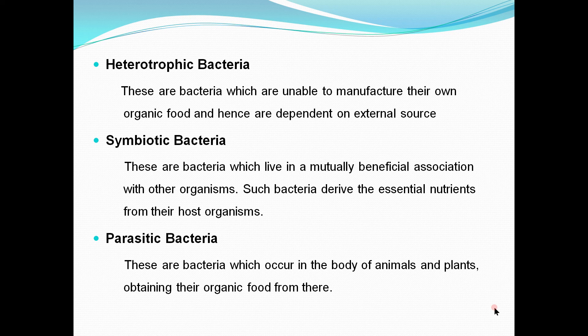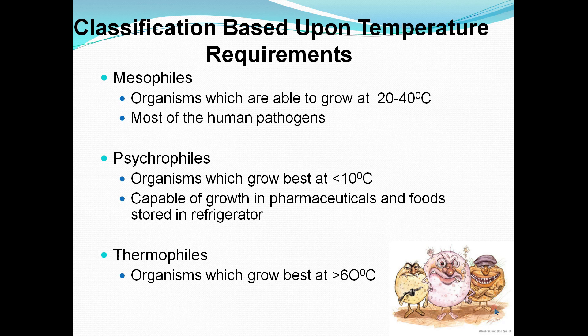Among heterotrophic bacteria, symbiotic bacteria have a mutually beneficial association with other organisms — they give benefits to the host organism and receive benefits in return, deriving essential nutrients from the host. Parasitic bacteria occur in the bodies of animals and plants, obtaining food from the host and as a result causing disease in that individual. This is beneficial for the bacteria but not beneficial for the host.